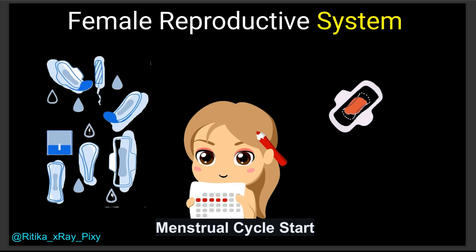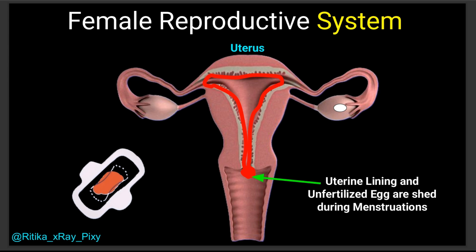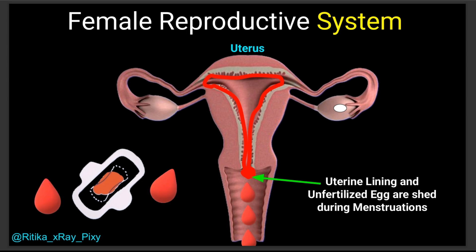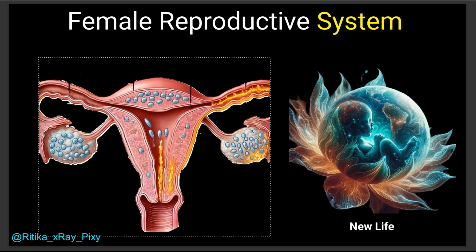The number of eggs varies from female to female and decreases over time through natural processes. If the egg is not fertilized, the uterine lining sheds and periods start. This lining is made of blood tissues, so when the egg is not fertilized it breaks down and blood with some tissues is released as menstrual blood.